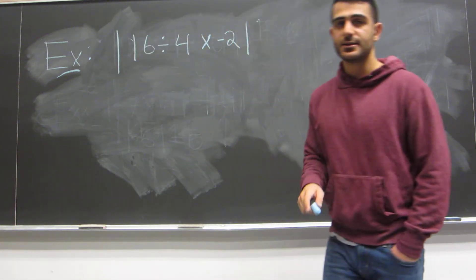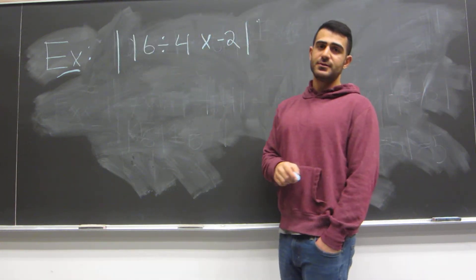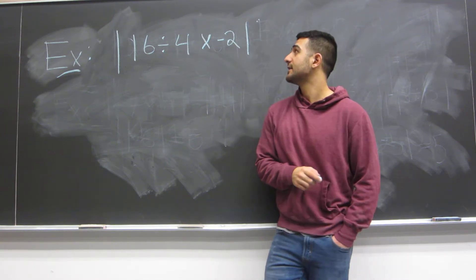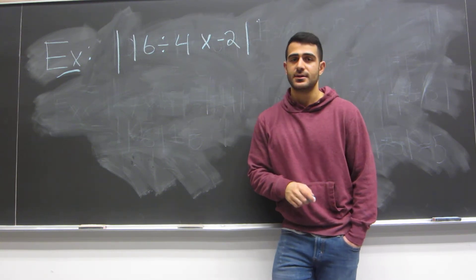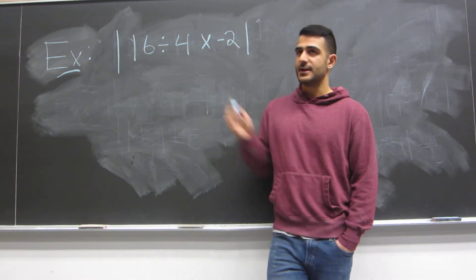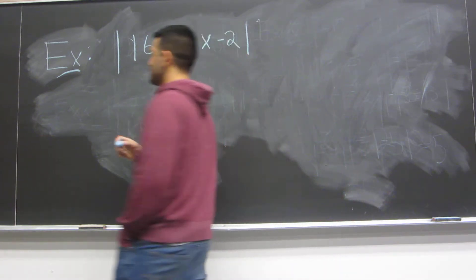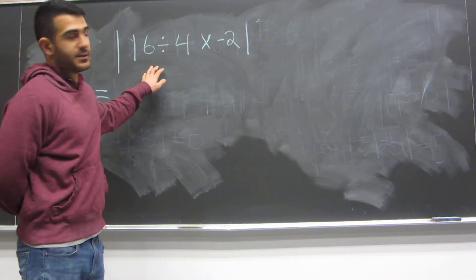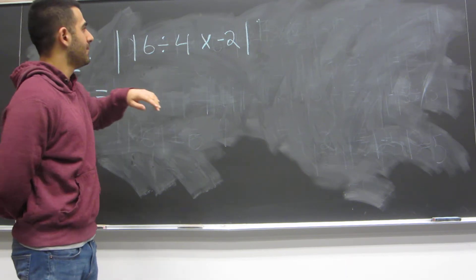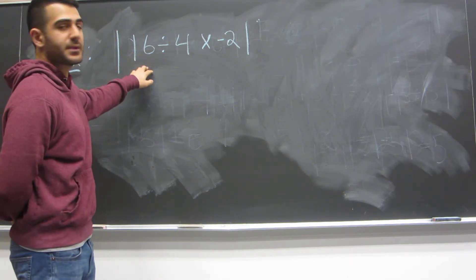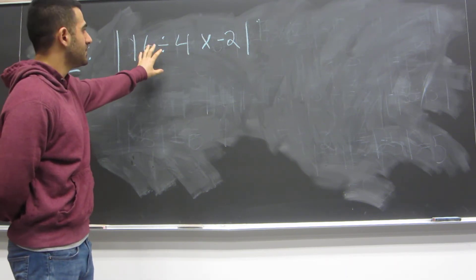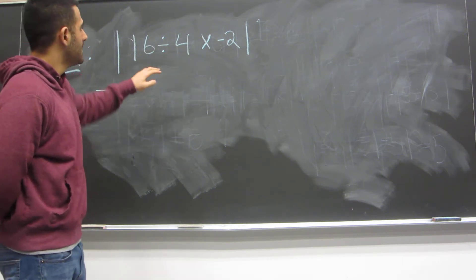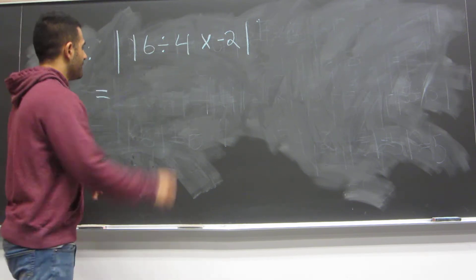We have the absolute value of 16 divided by 4 times negative 2. Same general principle: simplify as much as we can, then take the absolute value. Let's do it step by step rather than doing it all in our heads and then taking the absolute value.